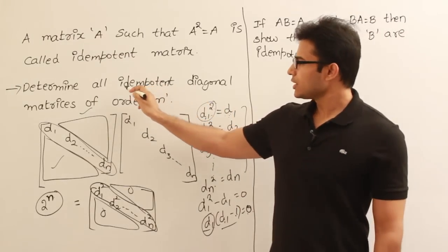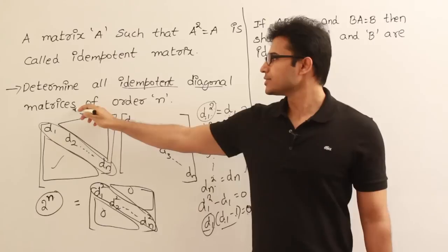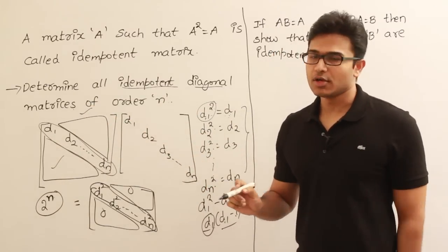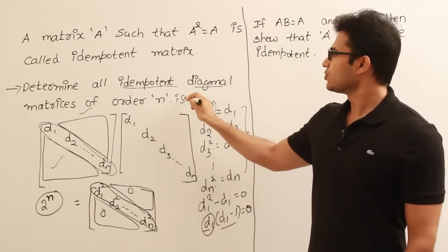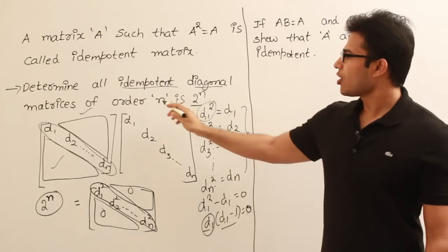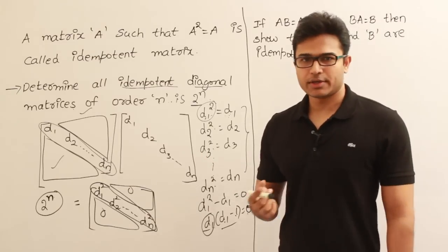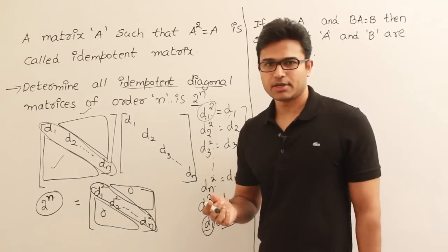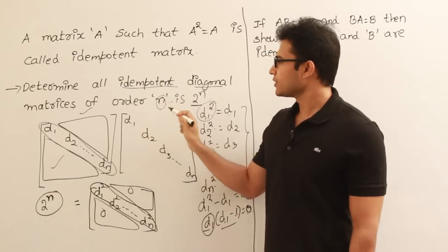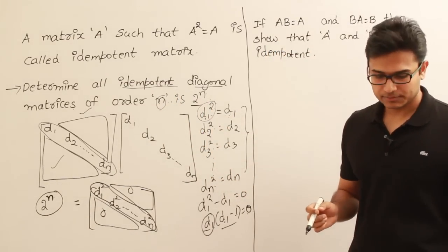Therefore, the total number of idempotent diagonal matrices of order N is 2 to the power N. For example, if they say of order 5, then it is 2 to the power 5, which is 32.